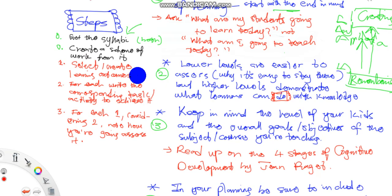For different lessons, for each of those outcomes create a corresponding task. Which activity am I going to use to achieve this outcome? This will be very easy if you follow the step where I told you to use active verbs. You know exactly which activity.